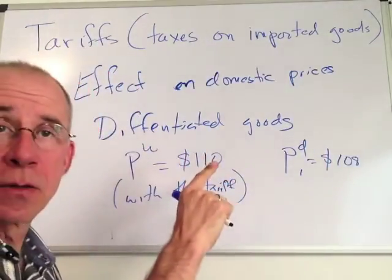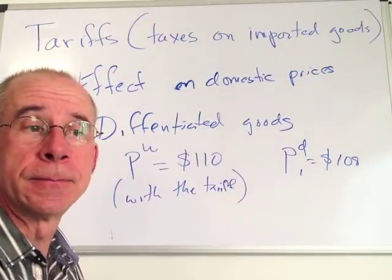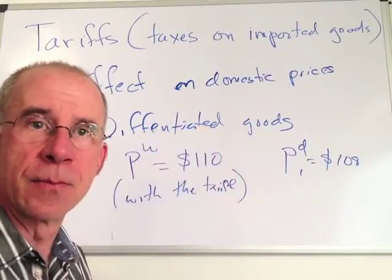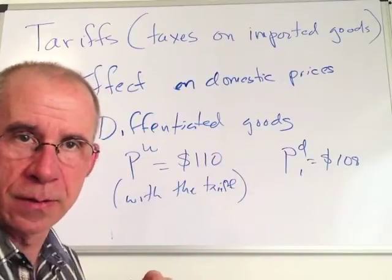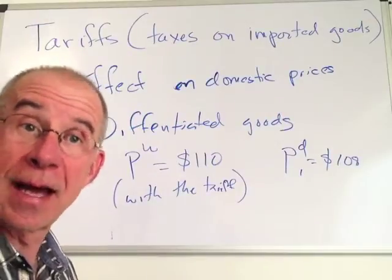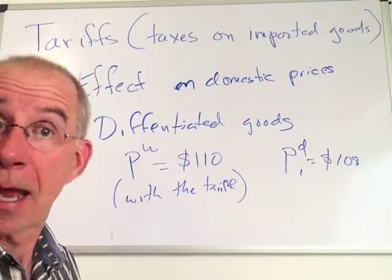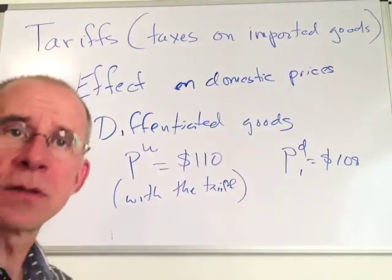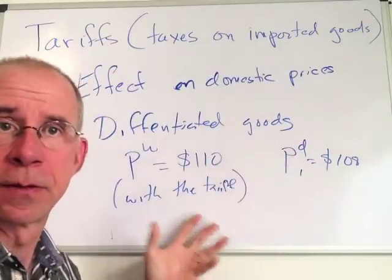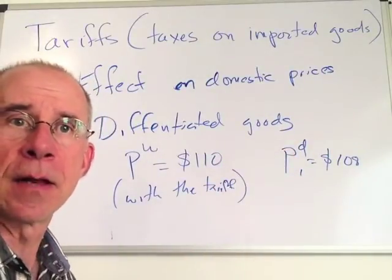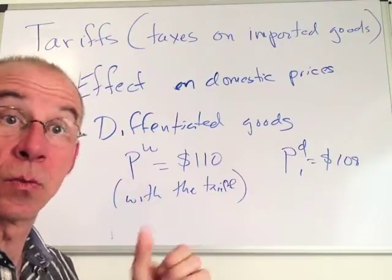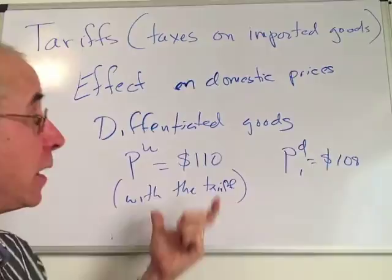In both the differentiated goods case and the perfect competition case, the domestic price tends to be bid up because of the tax on the imported good. The key point to focus on is that the restriction of competition from the imported source allows domestic firms to raise their price somewhat and operate in a way they couldn't before the government intervention. A tax on the imported good raises the foreign good's price and increases the domestic price.